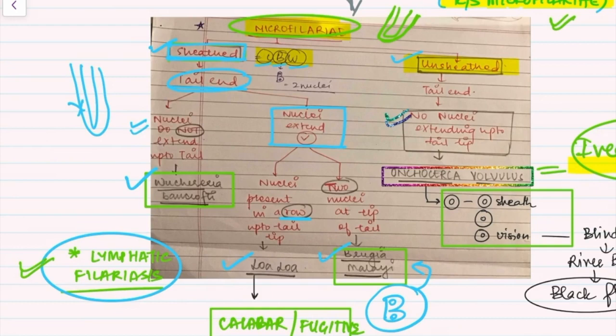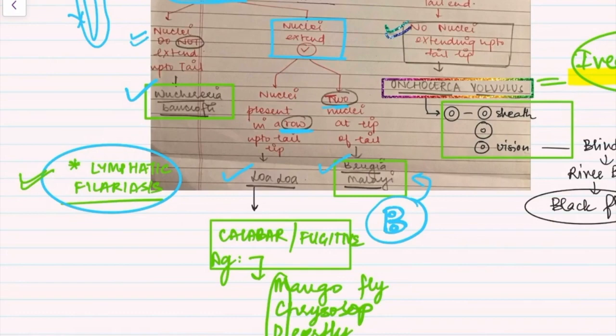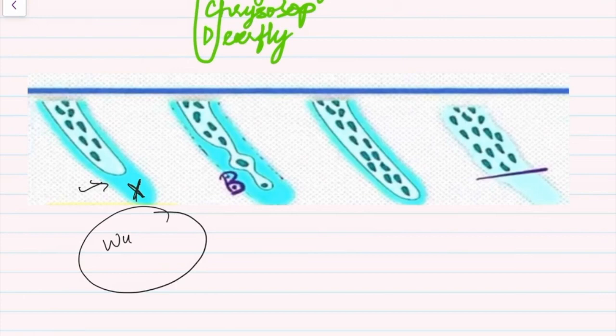If nuclei extend to the tail tip, check whether there are two discrete nuclei or nuclei in a row. Two discrete nuclei at the tail tip means Brugia malayi — remember 'B' for Brugia with two nuclei. If nuclei are present in a row extending to the tail tip, it is Loa loa. Images confirm: sheathed with no tail-tip nuclei = Wuchereria; two nuclei = Brugia malayi; nuclei in a row = Loa loa.